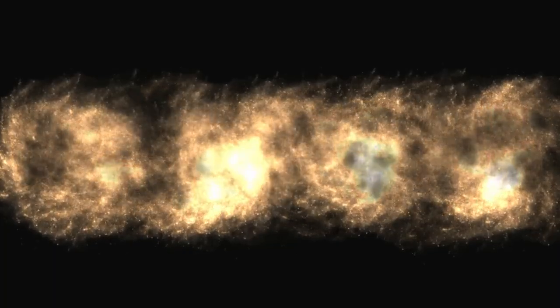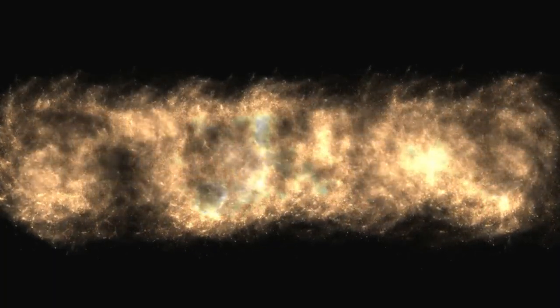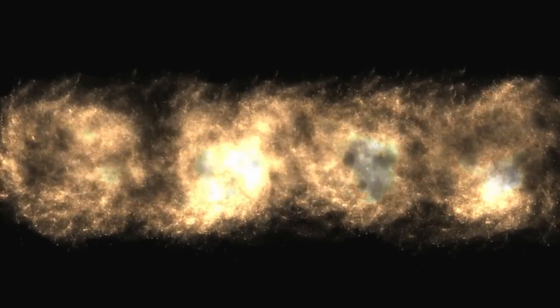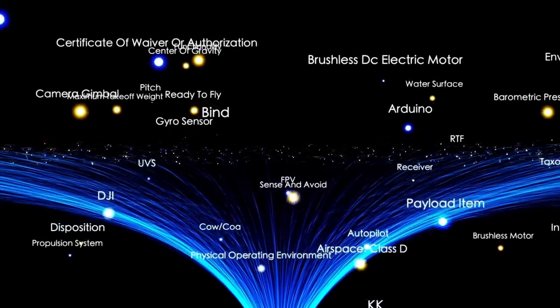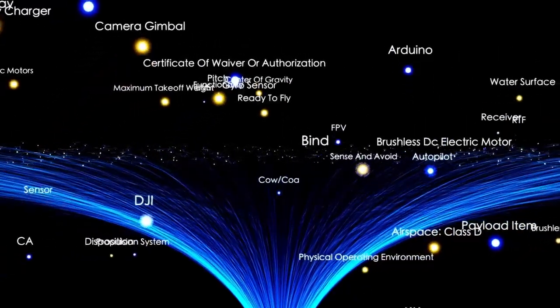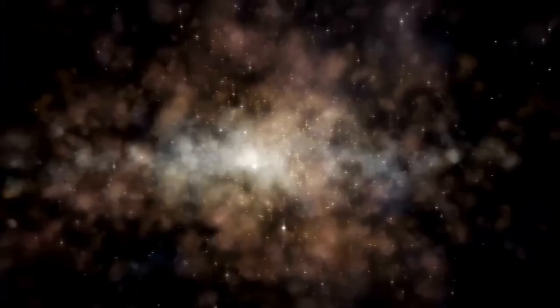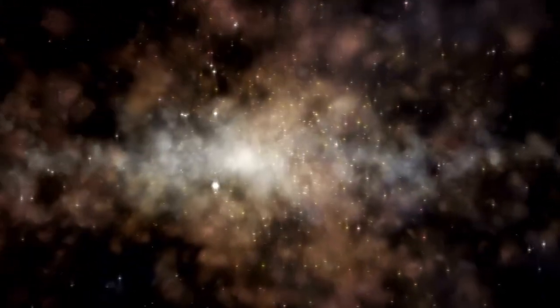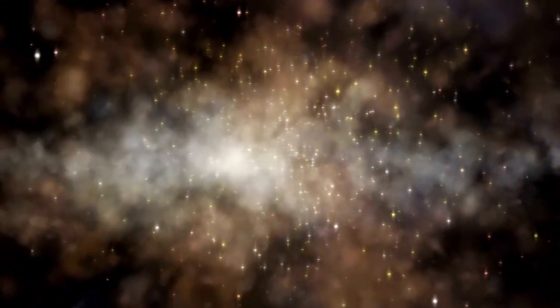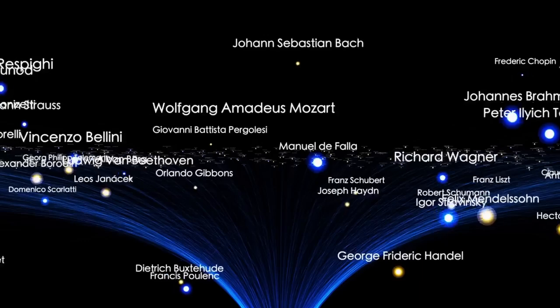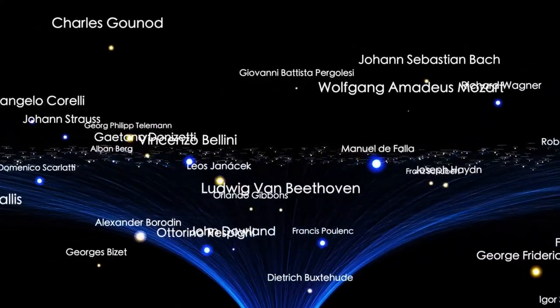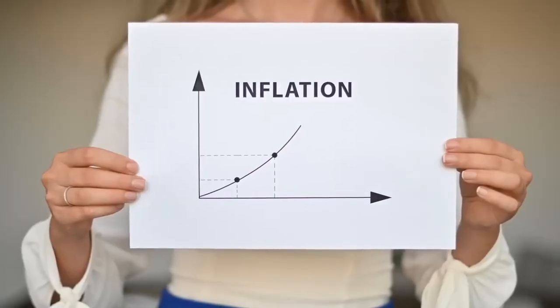At first, 3.I Atlas appeared as nothing more than a faint speck of light drifting along the edge of our solar system. Its path, however, told another story. It moved with a trajectory that no local object could follow, too sharp, too intentional. Born beyond the gravitational reach of our sun, flung across the galaxy by forces we cannot comprehend, the object glided silently into our cosmic neighborhood.